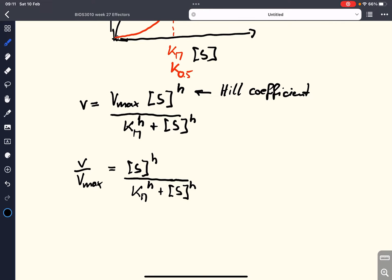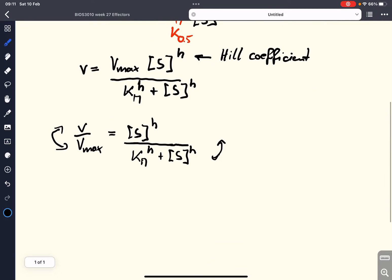We then invert both sides and we get Vmax over V equals Km to the power of H plus S to the power of H divided by S to the power of H.